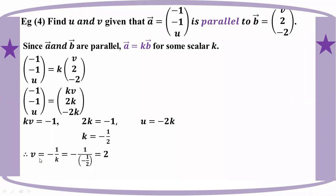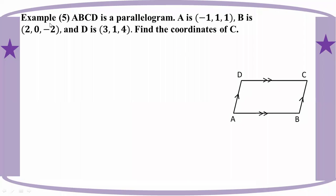Okay, as you can see, this is a spiral. ABCD is a parallelogram. ABCD is a parallelogram. We will return to the coordinates and go through a, b, c, d.